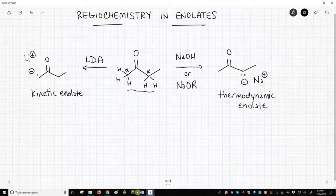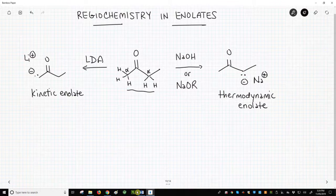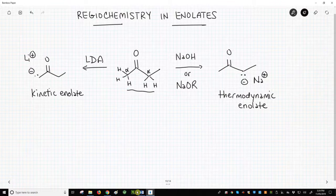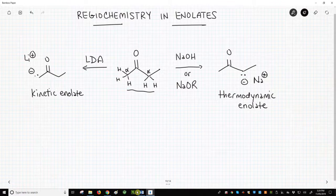Weaker bases, like alkoxides, favor the thermodynamic enolate. You might be thinking that, based on a previous video, we don't use hydroxide or alkoxides to make enolates. Well, in some cases we do, and in those cases, we'll form the thermodynamic enolate.